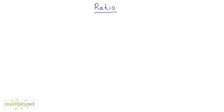In this video we are going to talk about ratio. A ratio is taken between two or more numbers. Let's say we have two numbers a and b. The ratio of these two numbers is written as a is to b — this colon sign denotes a ratio. A ratio of two terms, in this case a and b, is basically a fraction: a divided by b. So whenever you have a ratio of two numbers, it is basically a division of those numbers.